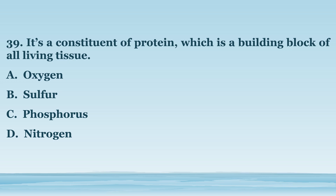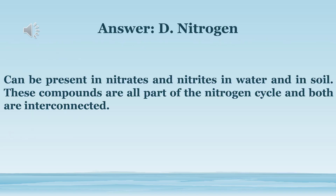Number 39. It's a constituent of protein, which is a building block of all living tissue. A. Oxygen. B. Sulfur. C. Phosphorus. D. Nitrogen. The answer is letter D. Nitrogen. Can be present in nitrates and nitrites in water and in soil. These compounds are all part of the nitrogen cycle and both are interconnected.